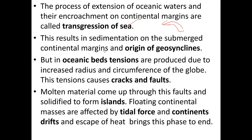The transgression of sea results in sedimentation on submerged continental margins and the origin of geosynclines. In the oceanic bed, tensions are produced due to the increased radius and circumference of the globe. These tensions cause cracks and faults. Molten material comes up through these faults, solidifies, and forms islands. Floating continental masses are affected by tidal forces and continental drift, and the escape of heat brings this phase to an end.